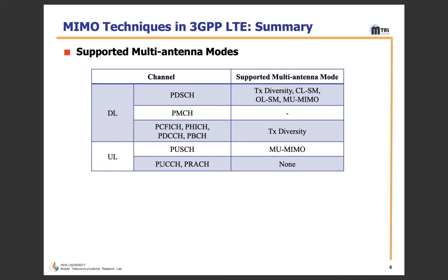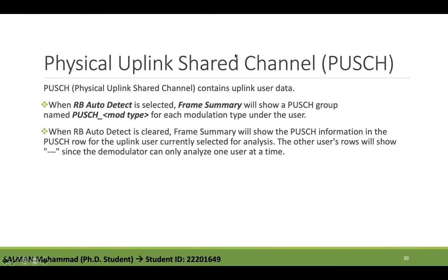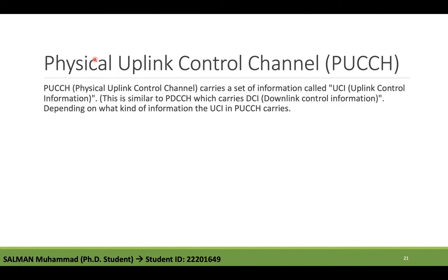PUSCH — Physical Uplink Shared Channel — contains uplink user data from UE to base station. When resource block auto-detect is selected, the frame summary shows information for each modulation type per user. PUCCH — Physical Uplink Control Channel — is used to carry control information from the user equipment to the base station. PUSCH carries uplink data; PUCCH carries Uplink Control Information (UCI), similar to how PDCCH carries DCI in the downlink.